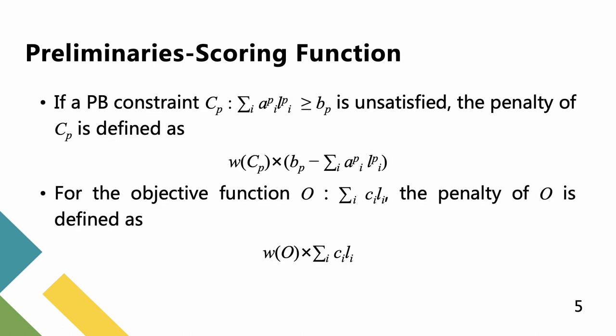If PB constraint Cp is unsatisfied, the penalty of Cp is defined as w(Cp) times bp minus the sum of api times lpi. For the objective function O, the penalty of O is defined as w(O) times the sum of ci times li.